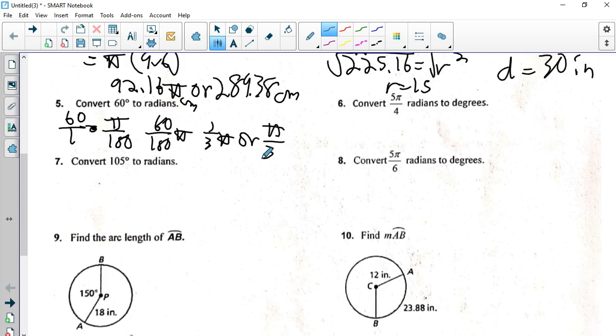Now, I'm going the other direction. 5 pi over 4, convert to radians. We want the pi to cancel. So this time, we're going to put pi on the bottom and have 180 on the top. So the pi's cancel, and you just type in your calculator 5 times 180 divided by 4. And you get 225 degrees.